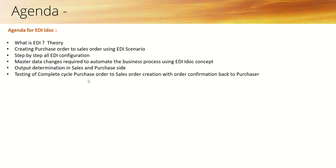First, we will create a purchase order in one sender system. Then we can see the sales order created automatically using EDI in the receiver system. We will also send back the order confirmation back to the purchaser. This all we will learn in this course.